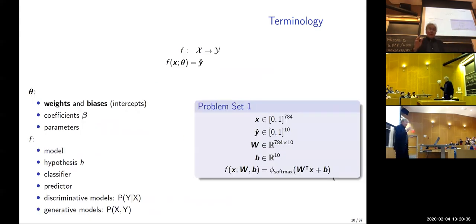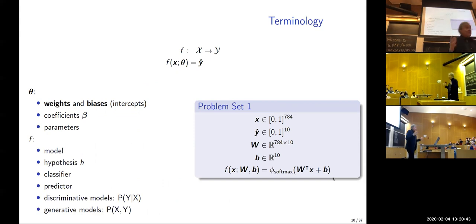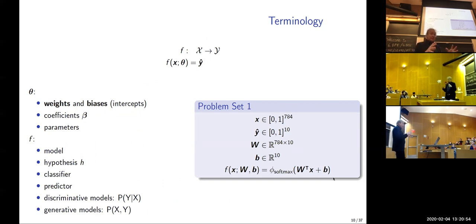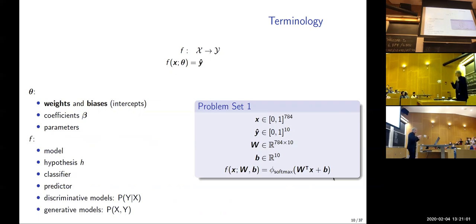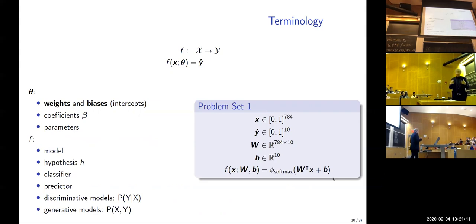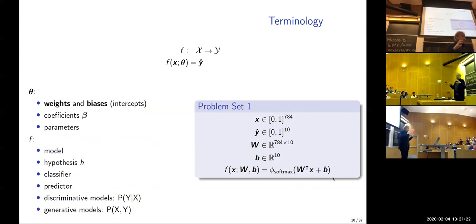We're going to think about functions parameterized by a set of parameters theta, which typically are weights and biases used by the model. When you hear the buzzword 'learning about learning,' it's trying to figure out which classes of functions are going to be appropriate for a particular task — meta-learning in the sense that we want to understand which functions to try to fit to our features to make predictions.